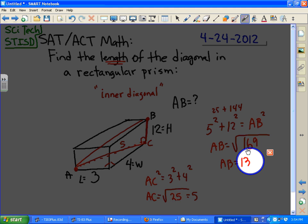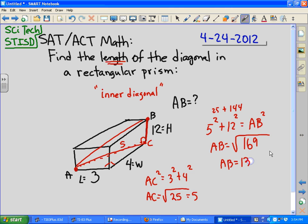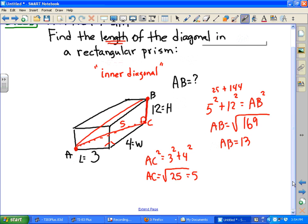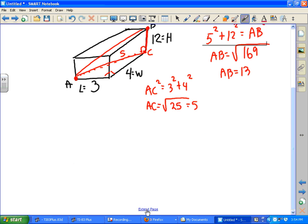So that's the length of the inner diagonal. Now we can summarize this lesson and say that anytime you have a rectangular solid, the inner diagonal is always going to be the square root of the three dimensions: length squared plus width squared plus height squared.